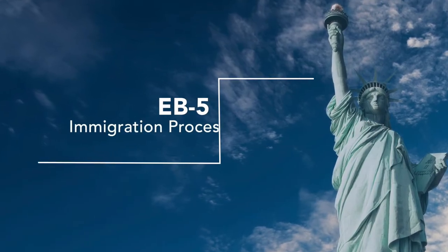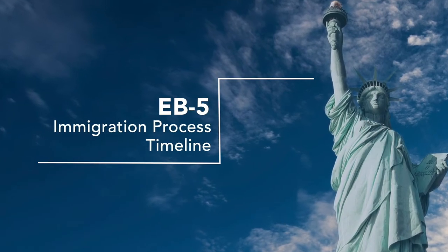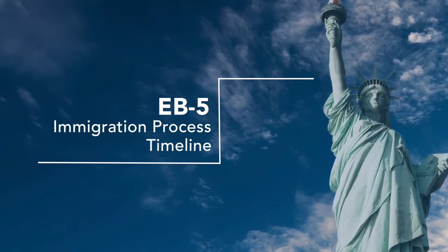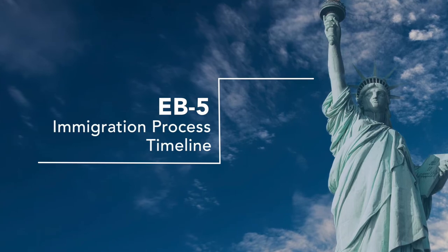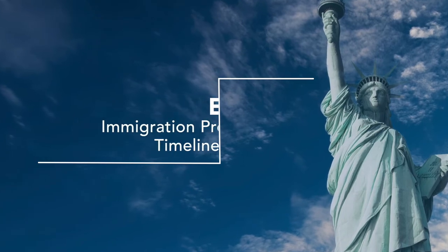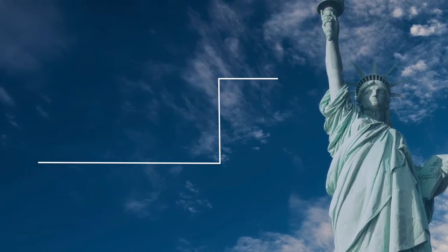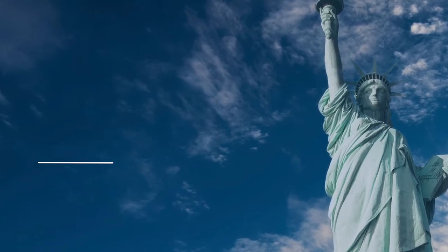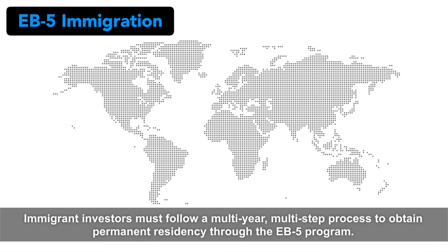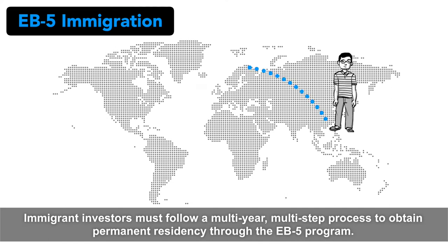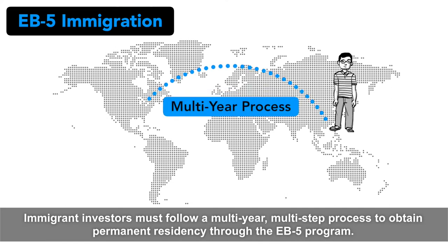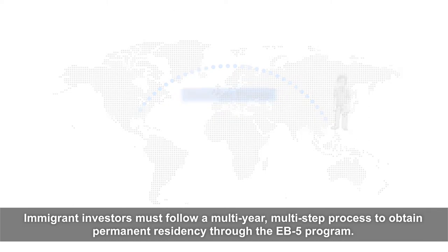EB-5 Immigration Process Timeline. Immigrant investors must follow a multi-year, multi-step process to obtain permanent residency through the EB-5 program.